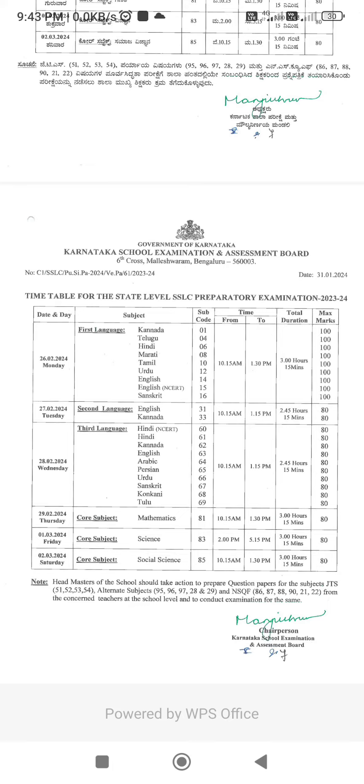And you know it is a February month, so 29 days are there — this is a month of a leap year. So 29 days, then again we have on 1st March science, 2nd March social science.